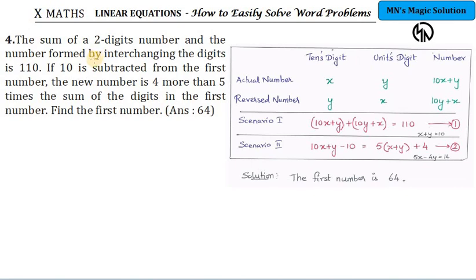The fourth question is similar to the third one. Here, the sum of a two-digit number and the number obtained by interchanging the digits is 110. So the sum of these two is 110. For the second scenario, the statement is slightly different. If 10 is subtracted from the first number, the new number is 4 more than 5 times the sum of digits in the first number. Find the first number.